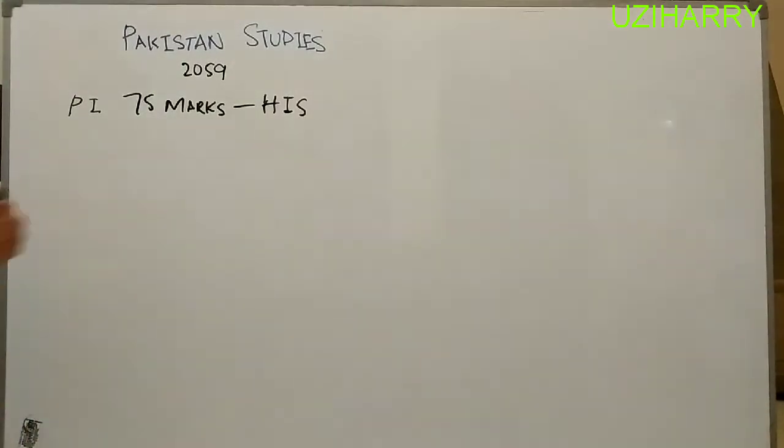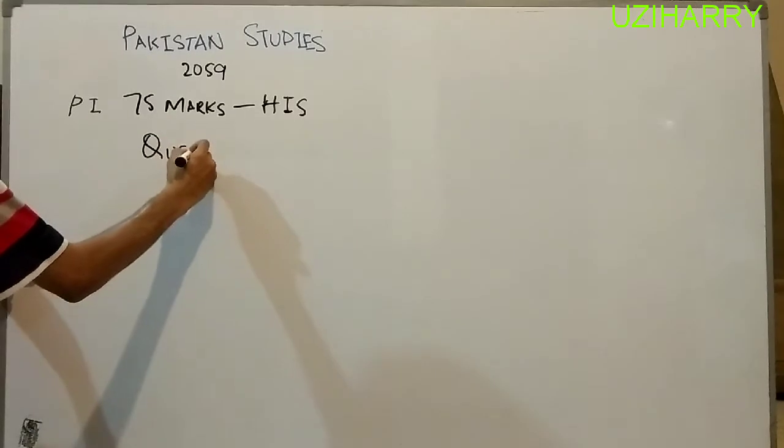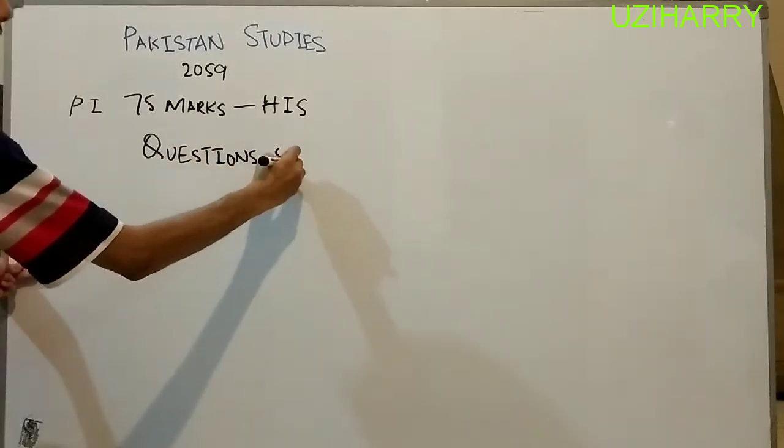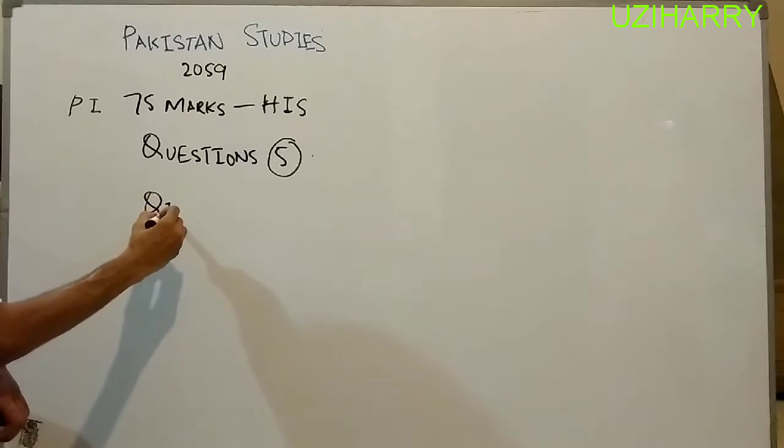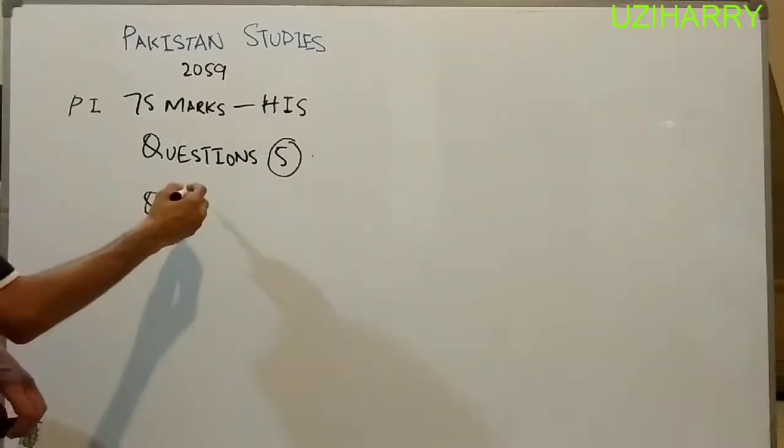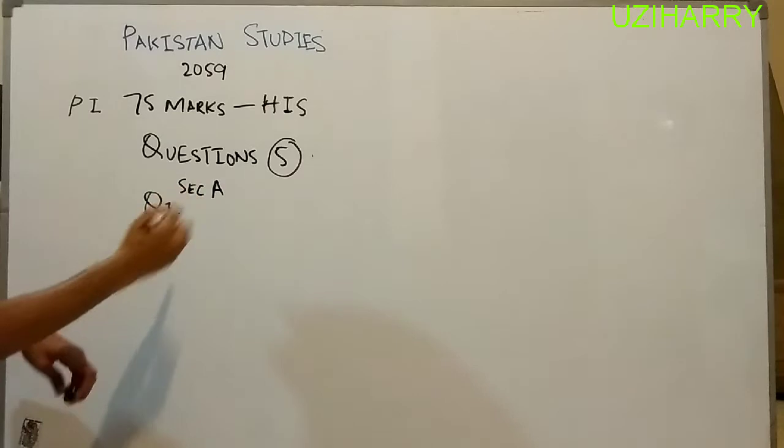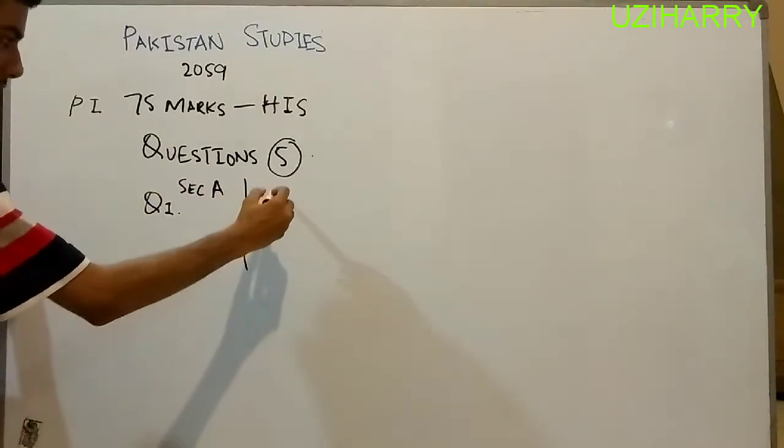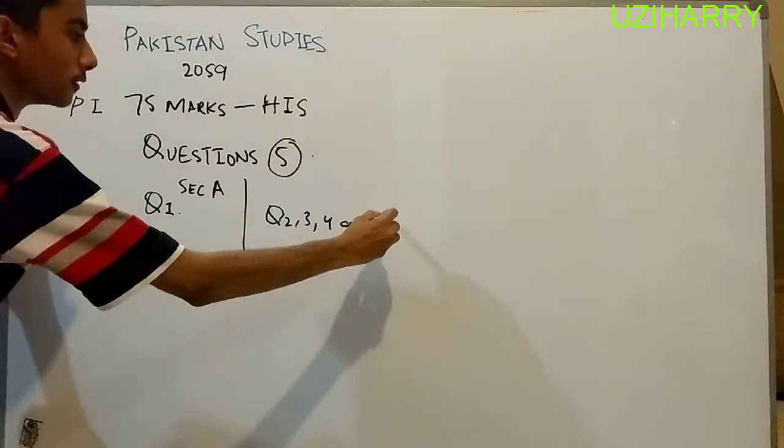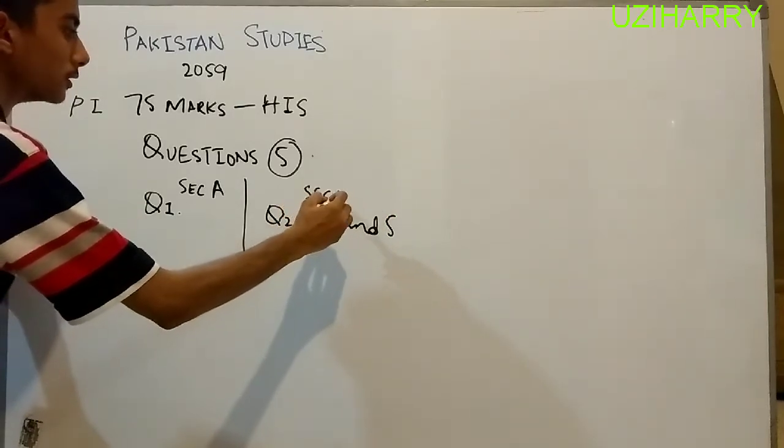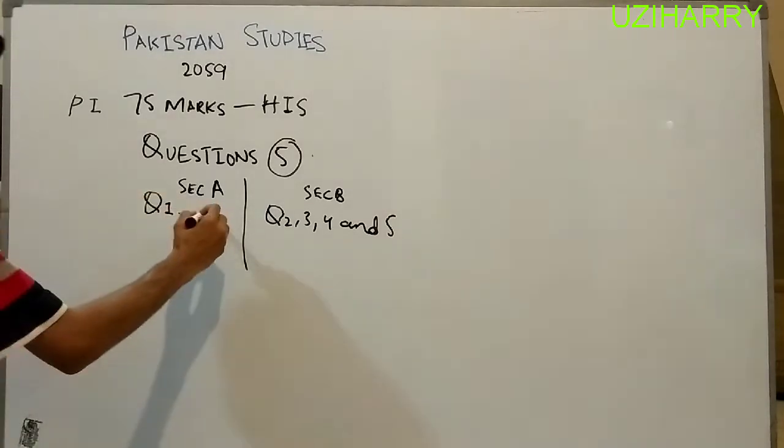First of all, we need to understand that there are five questions in the history paper. Question number one is compulsory and comes in section A, while the other four questions - question 2, 3, 4, and 5 - are from section B.